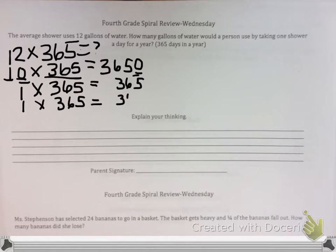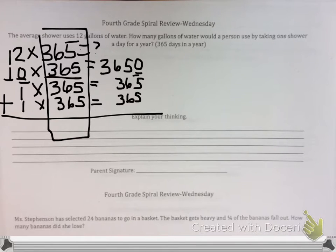It's important that we line it up by place value so we don't miscalculate when we add things up. So I kept my 365 the same, and I broke apart my 12.